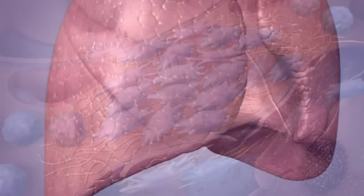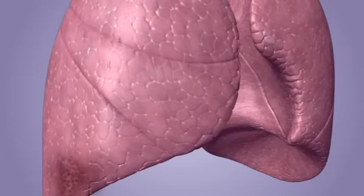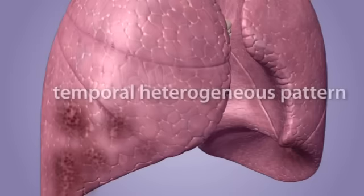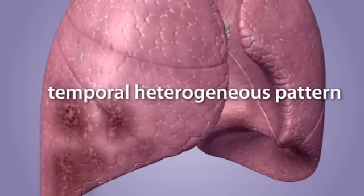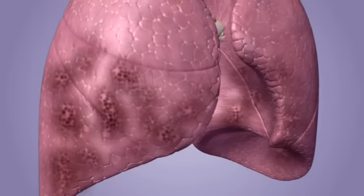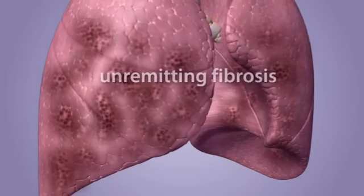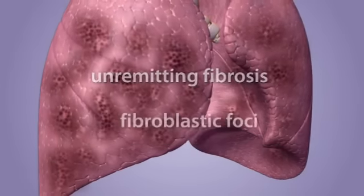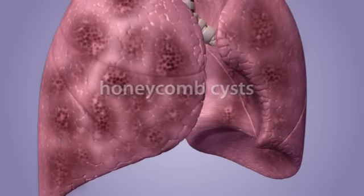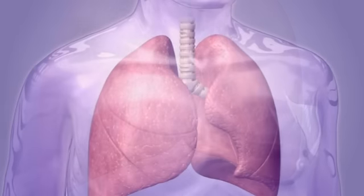Contributing to further destruction of normal lung architecture, the disease becomes more extensive due to repeated injury, each at different stages of development throughout the lung. This explains the temporal heterogeneous pattern interspersed with healthy lung tissue and the gradually increasing accumulation of matrix, unremitting fibrosis, fibroblastic foci, and honeycomb cysts that are the hallmark features of idiopathic pulmonary fibrosis.